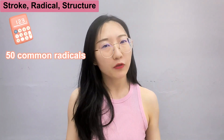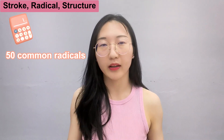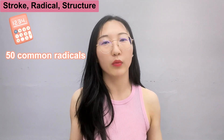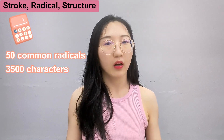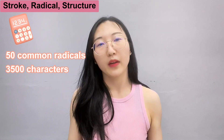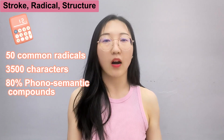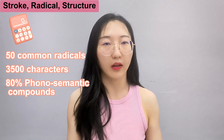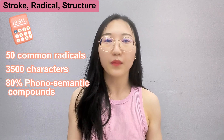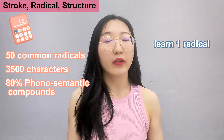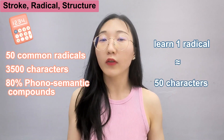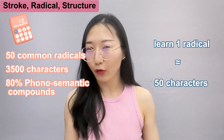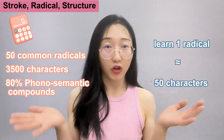So let's do some math about learning Chinese. There are about 50 common radicals, and by the time we graduate from middle school we are required to recognize 3,500 characters, which are enough to live a full life with. Since 80% of present characters are phono-semantic compounds, that means by learning one radical you may vaguely guess the meaning of over 50 characters. How thrilling is that — just mathematically speaking.